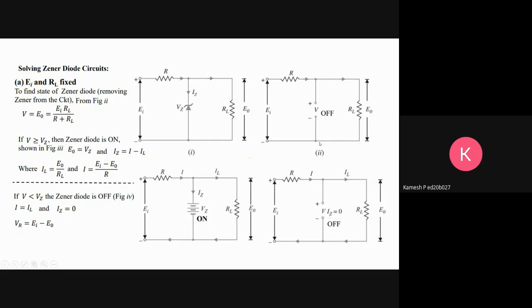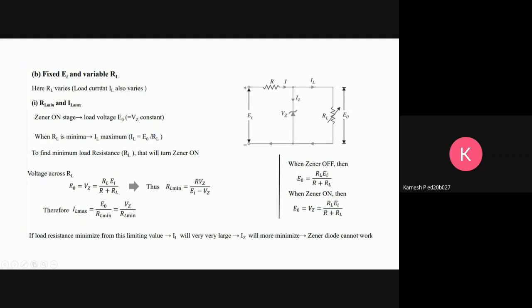If that E0 is greater than Vz, there is a passage of current through the Zener diode. When we keep Ei fixed and RL variable, you can see that RL changes.